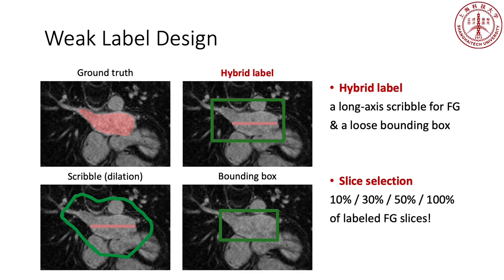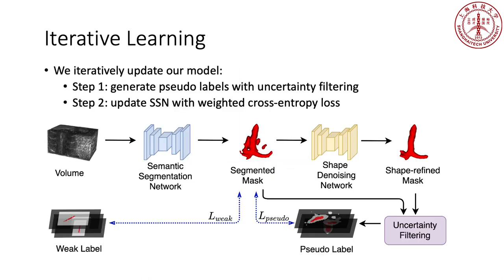To label the long-axis scribble for foreground, you only have to click two extreme points. To label the loose bounding box, you only have to click two diagonal corners. The cost of a hybrid label is comparable to scribble or tight bounding box. For slice selection, we investigate model performance under labeled foreground ratios from 10% to 100%.